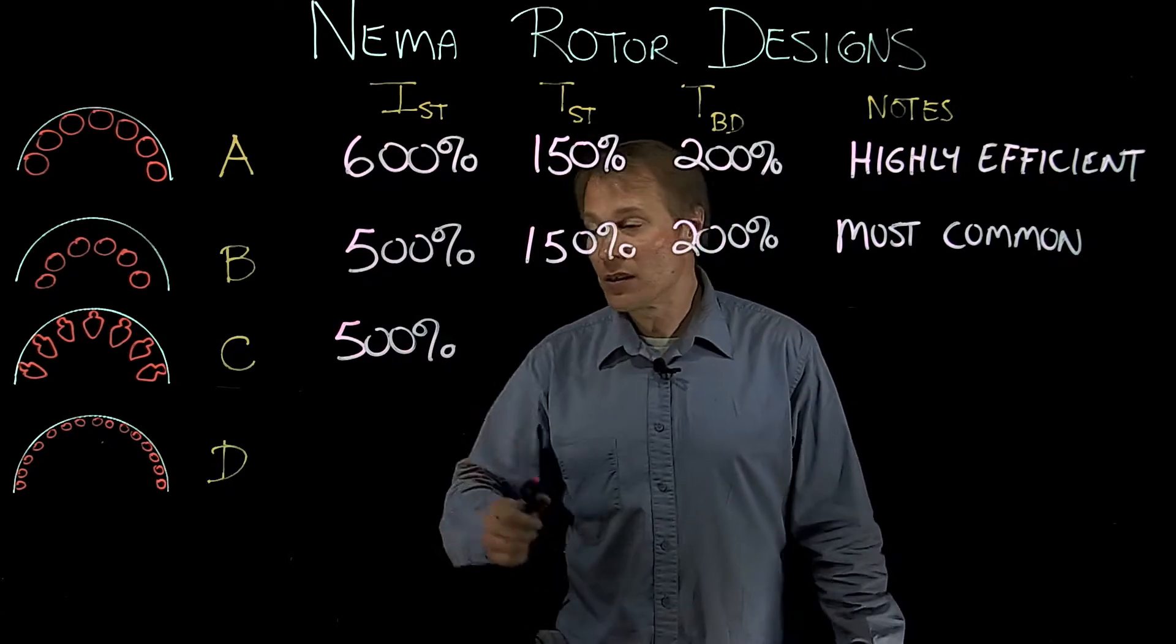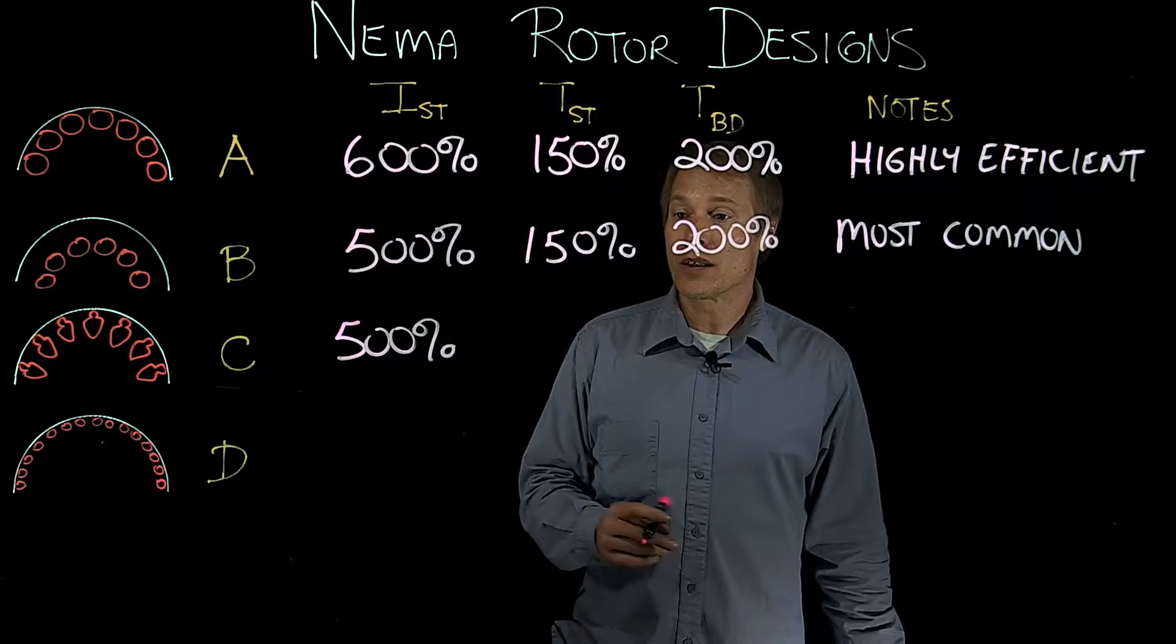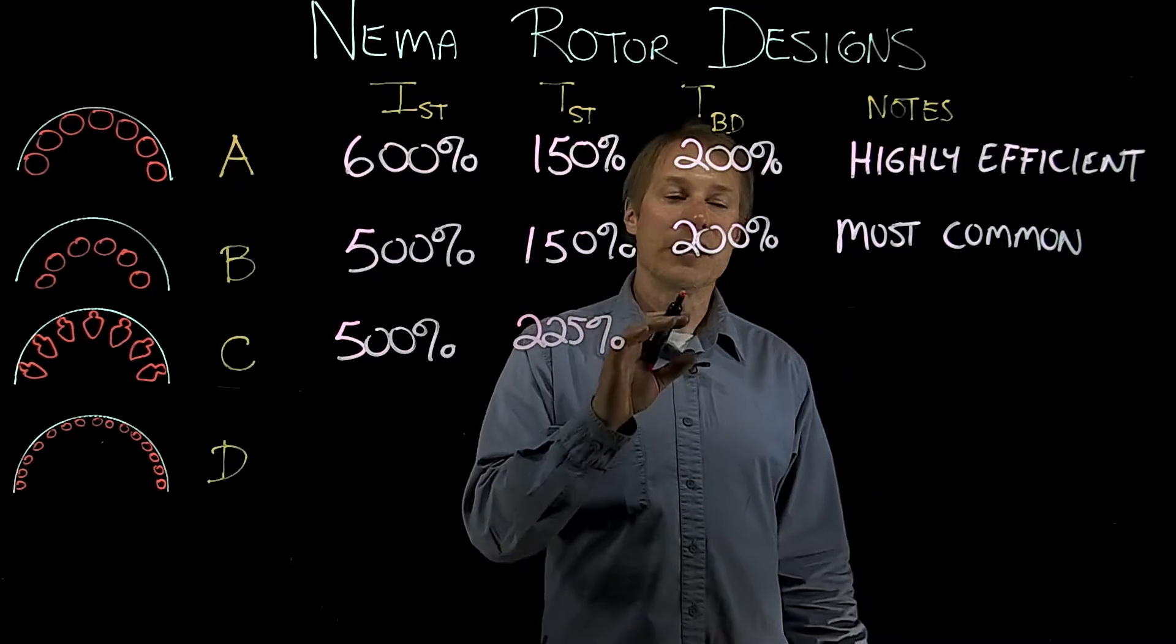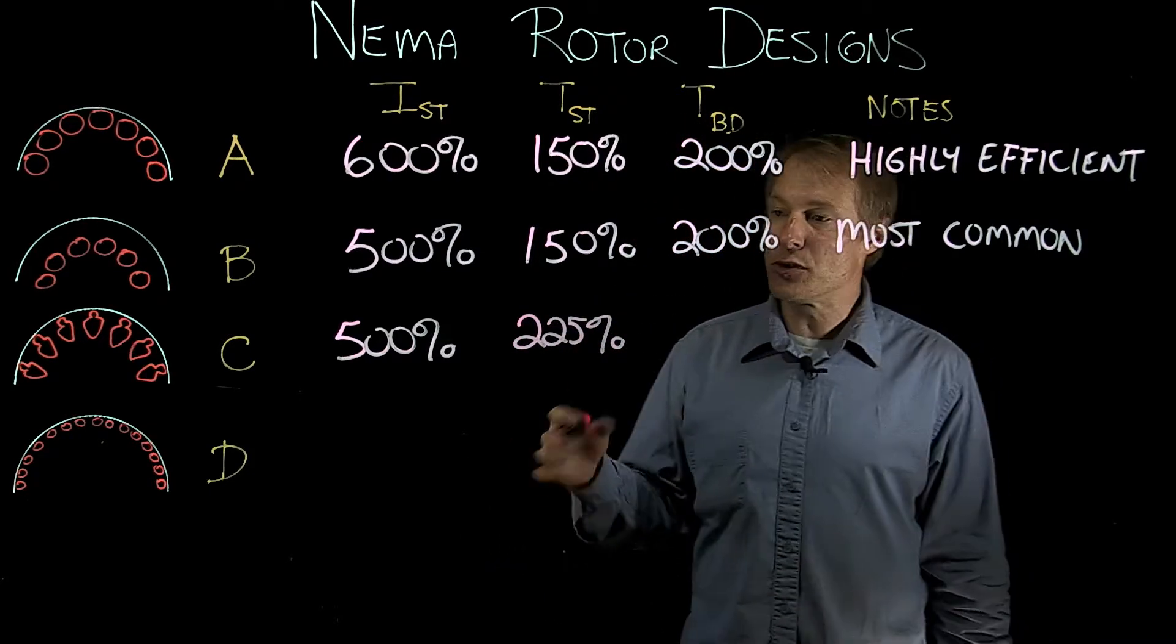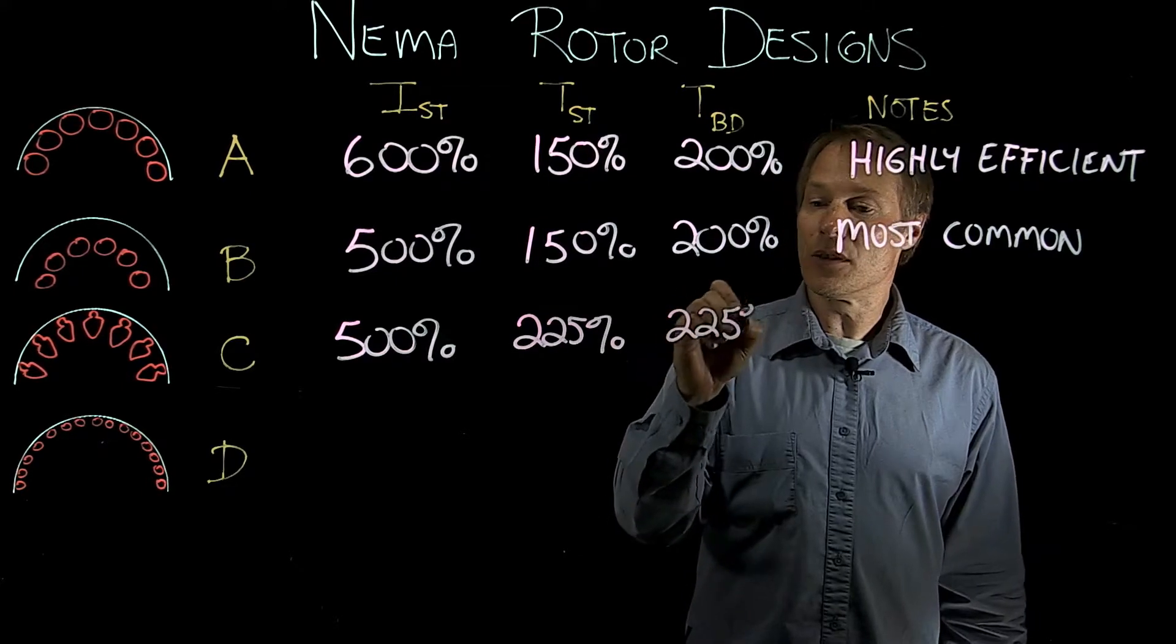So most of the current is going to go through the smaller rotor bars, in this case, or the edge ones, the outer edge ones. And that's going to raise the starting torque to 225%. Now the breakdown torque for a NEMA-C is usually right at start, so that will also be 225%.